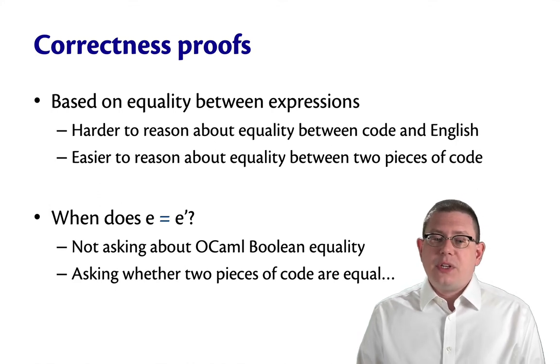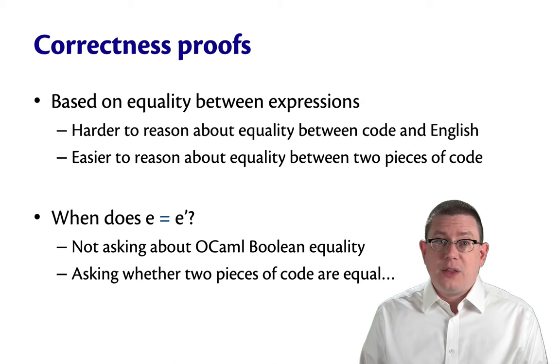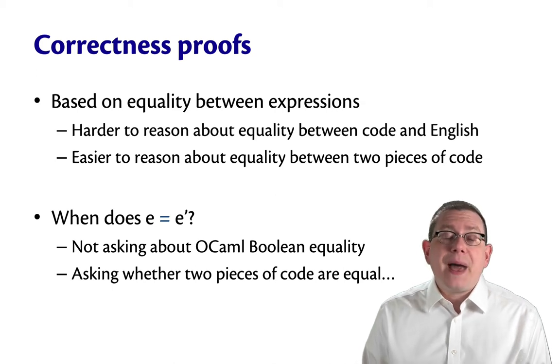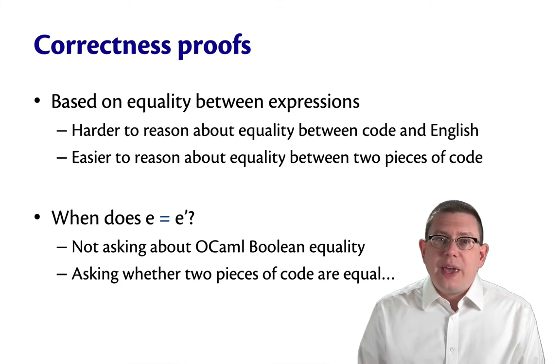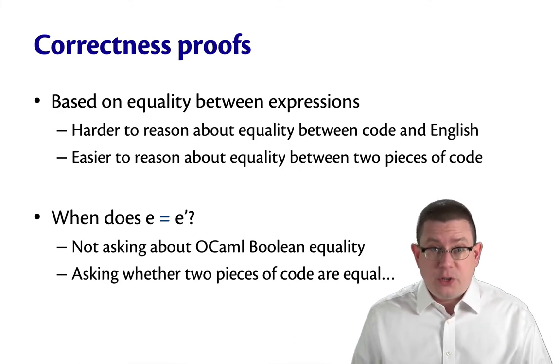What's easier is to reason about equality between two pieces of code. So as we go along, we'll see ways of treating one piece of code as the specification and another piece of code as the implementation. But right away, what that means is we need a way to think about equality between expressions, equality between pieces of code.